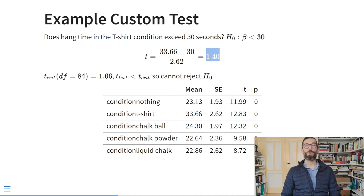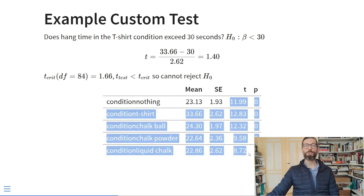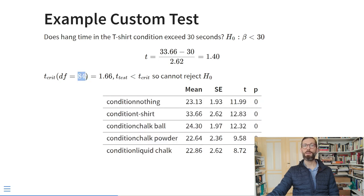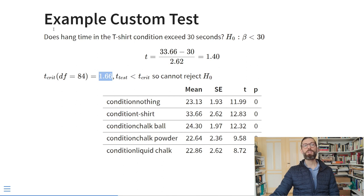We calculate a t-statistic by taking the observed mean 33.66 minus the hypothesized value of 30, divided by the standard error of 2.62. That gives approximately 1.4. With 84 degrees of freedom and a one-sided alpha of 0.05, the critical value is 1.66. Since 1.4 is less than 1.66, we cannot reject the null hypothesis — hang time in the t-shirt condition does not significantly exceed 30 seconds.